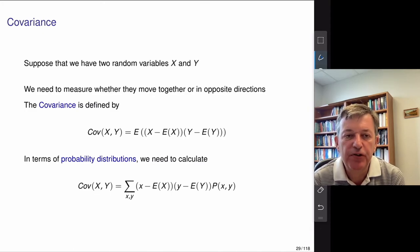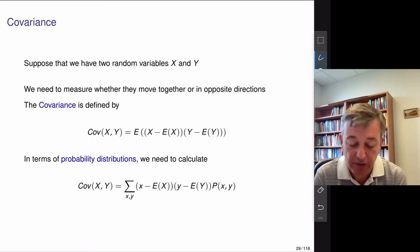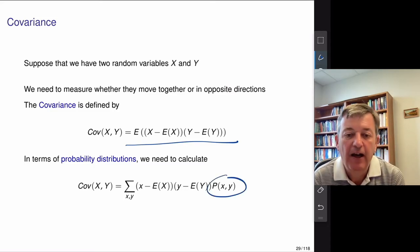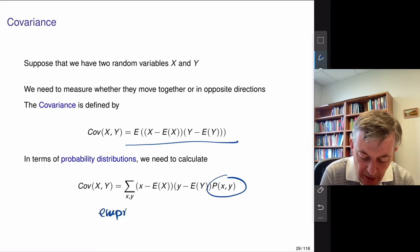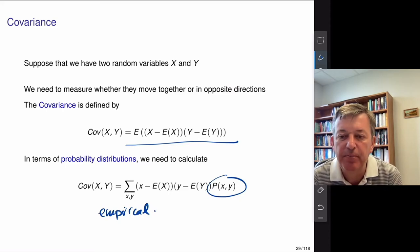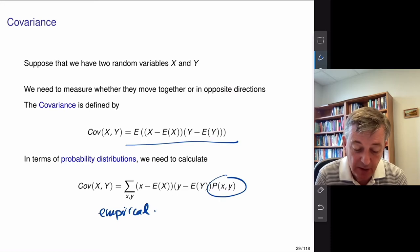Two more concepts: covariance and correlation. Covariance is given by the expected value of (X minus its mean) times (Y minus its mean). If I know the probabilities I can calculate it; otherwise I estimate it empirically just like x-bar, using (Xi minus x-bar) times (Yi minus y-bar) summed over observations. Correlation is essentially standardized covariance — you take the covariance divided by the product of the two standard deviations, normalizing it to lie between minus one and one.